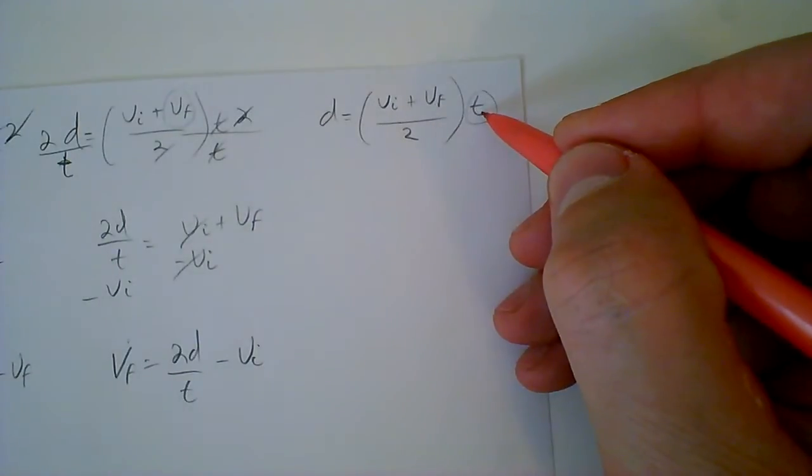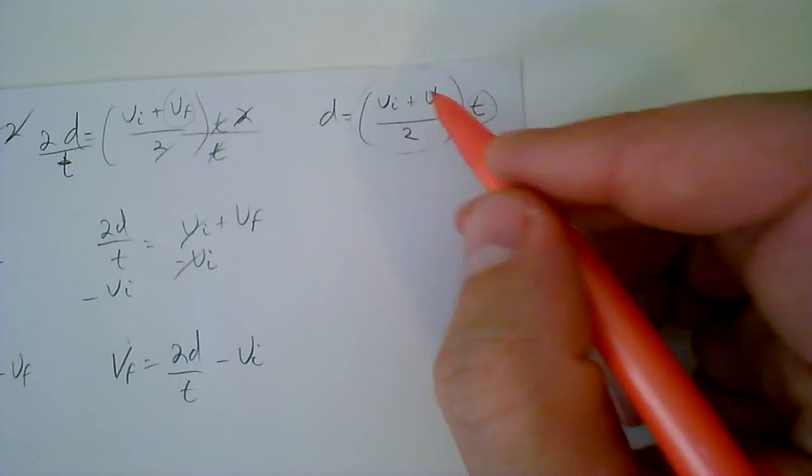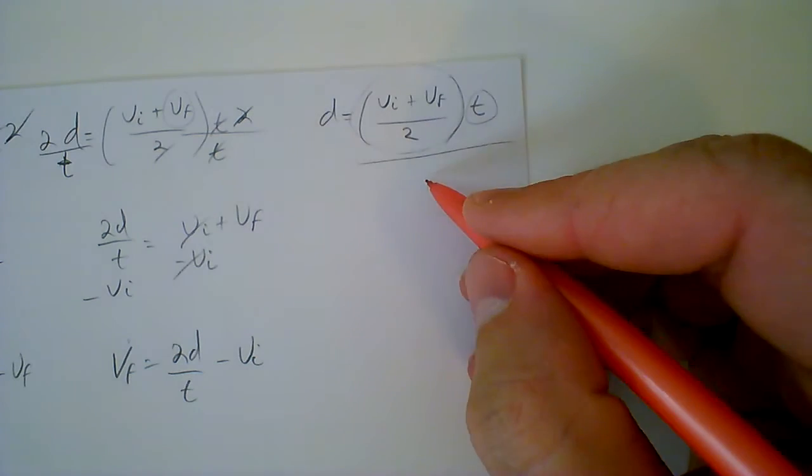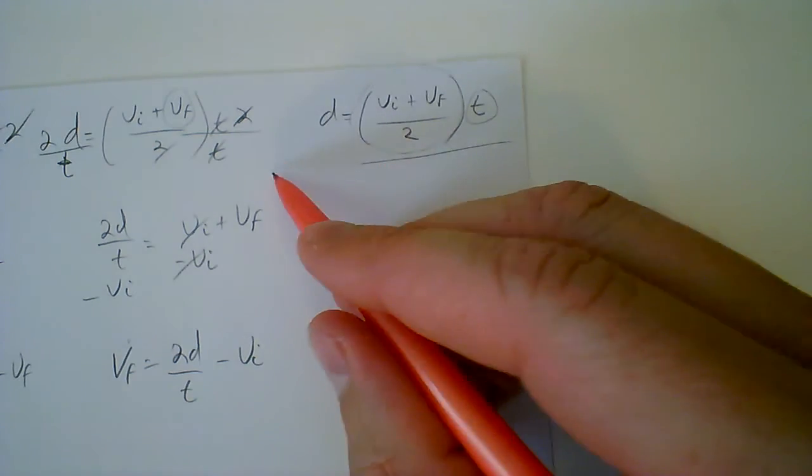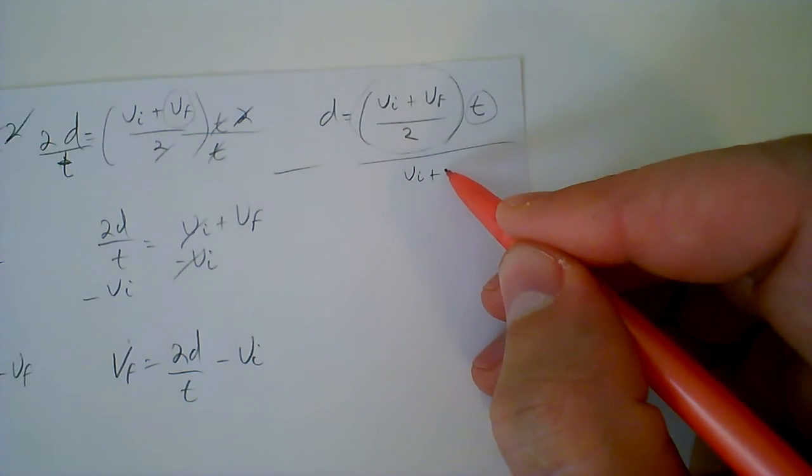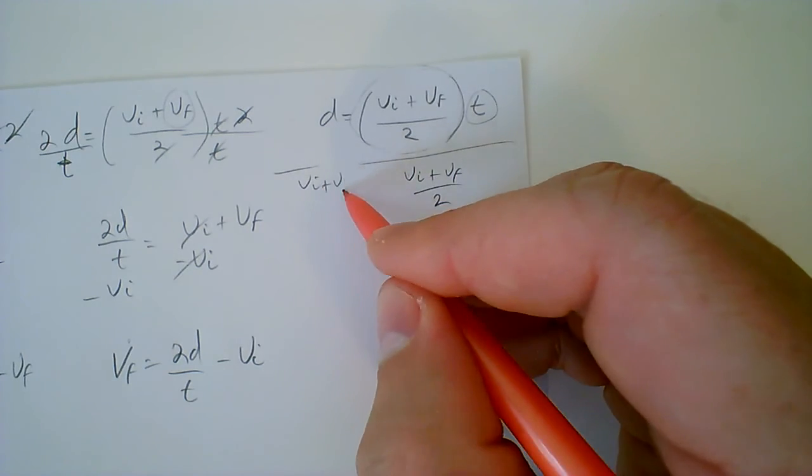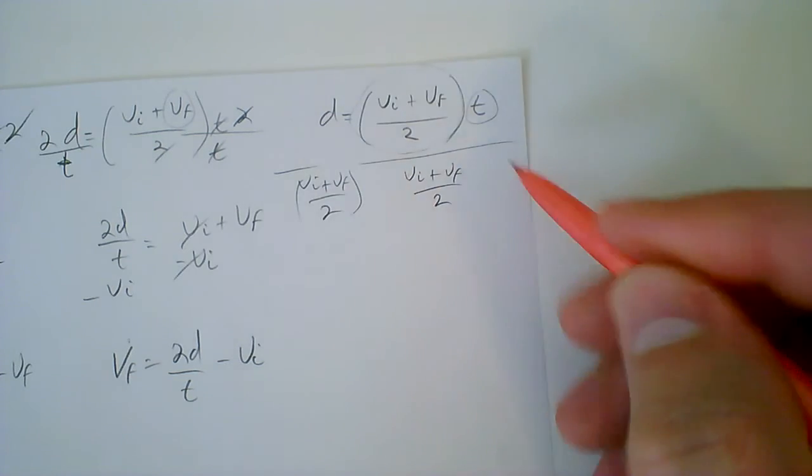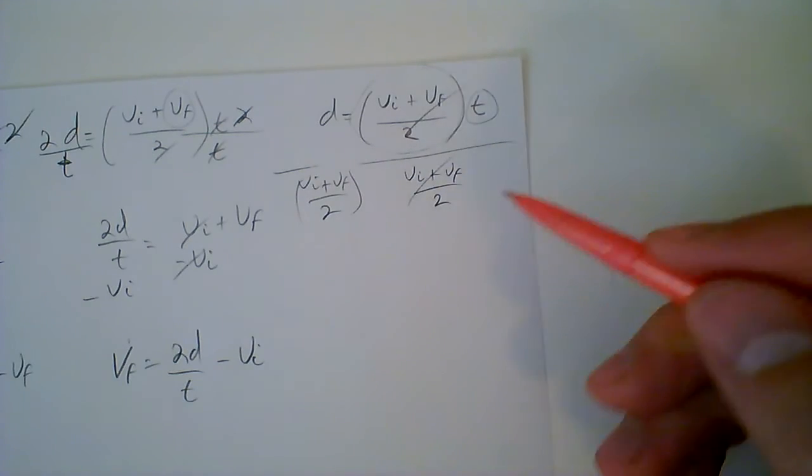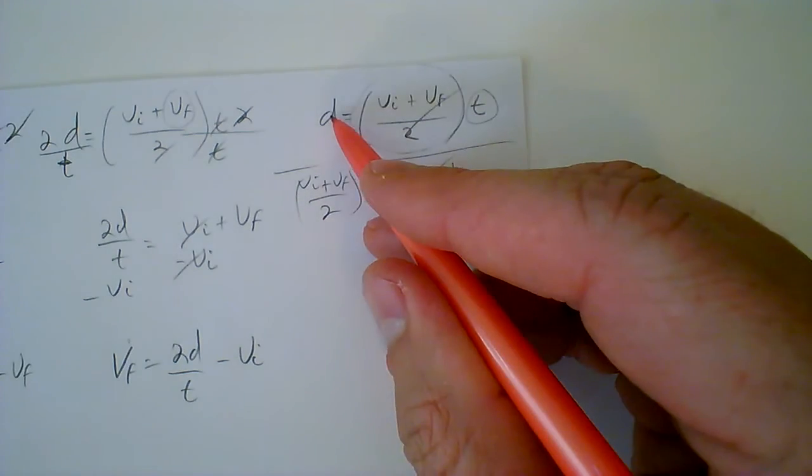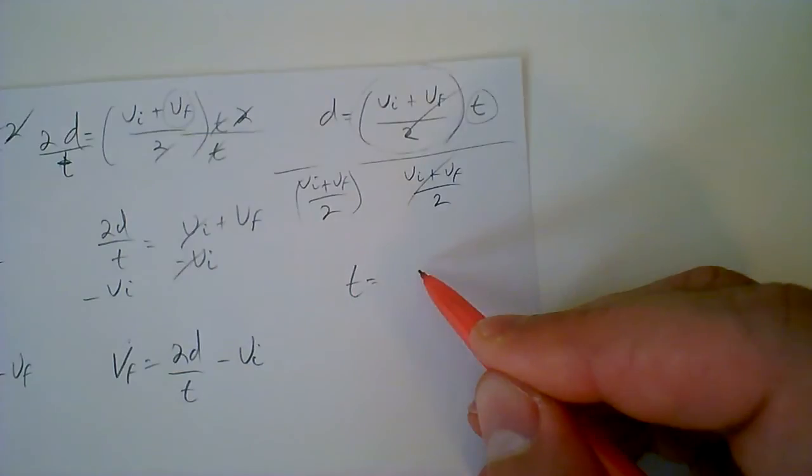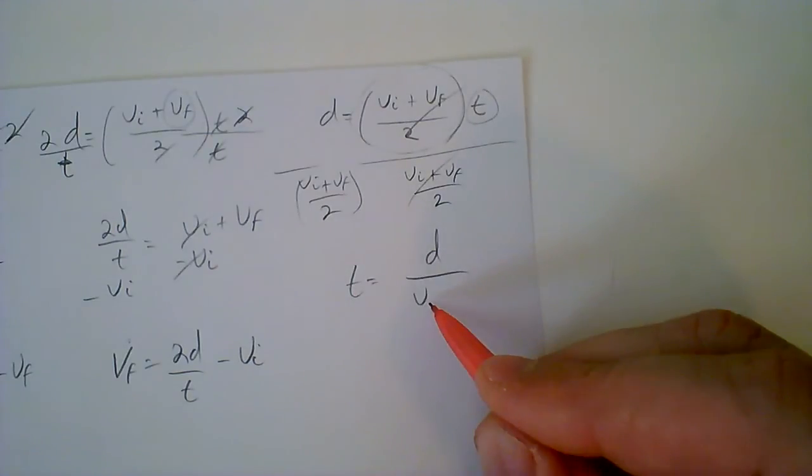To get t alone, all you're going to do is take this whole chunk and divide both sides by it. So divide both sides by vi plus vf over 2, and that's going to get rid of that whole thing, and t ends up equaling d over that. So t equals d over vi plus vf over 2.